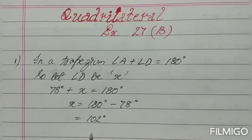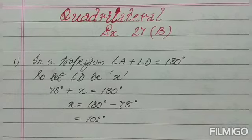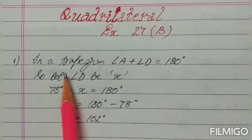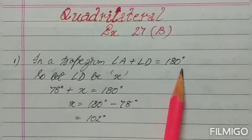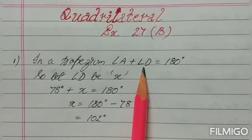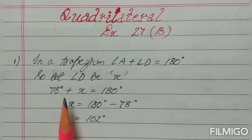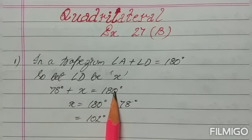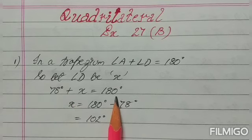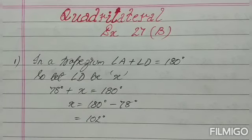In order to calculate angle D and angle B, we will have to use a variable. In a trapezium, angle A plus angle D equals 180. So suppose angle D is X. Angle A plus angle D equals 180, so 78 plus X equals 180, giving X equals 102.